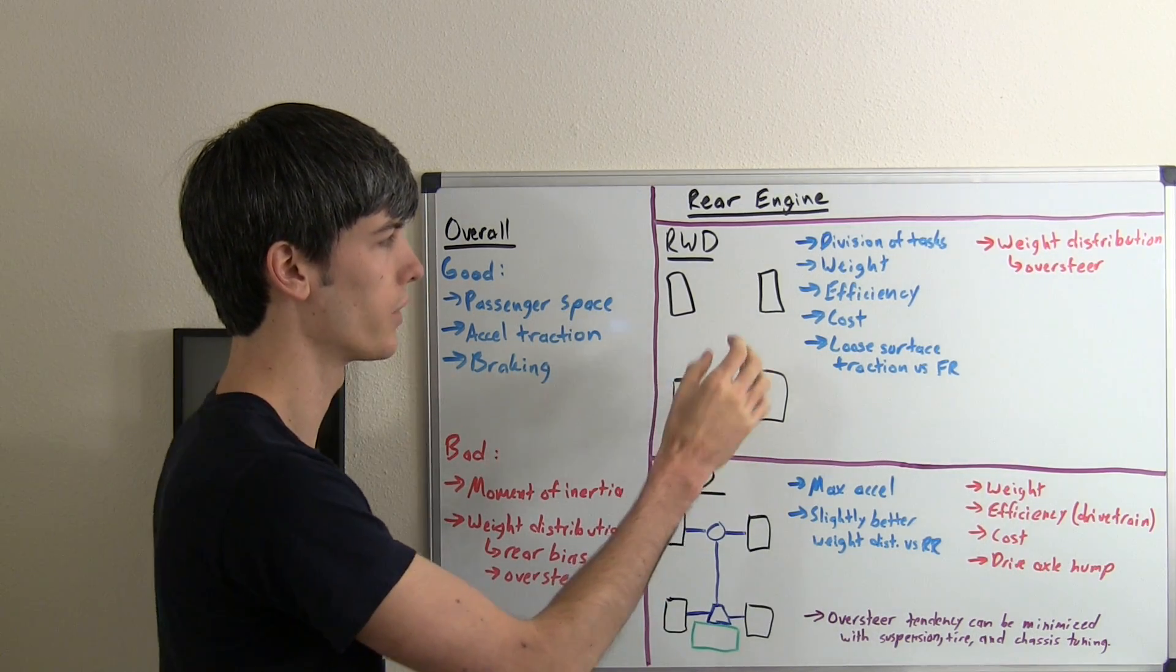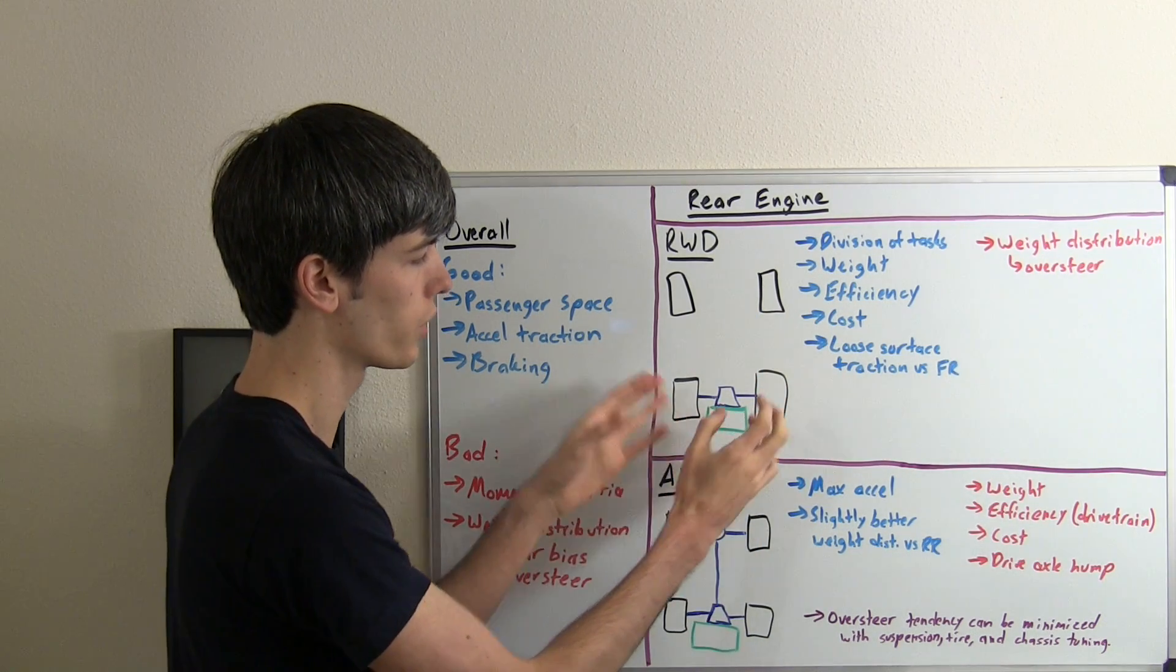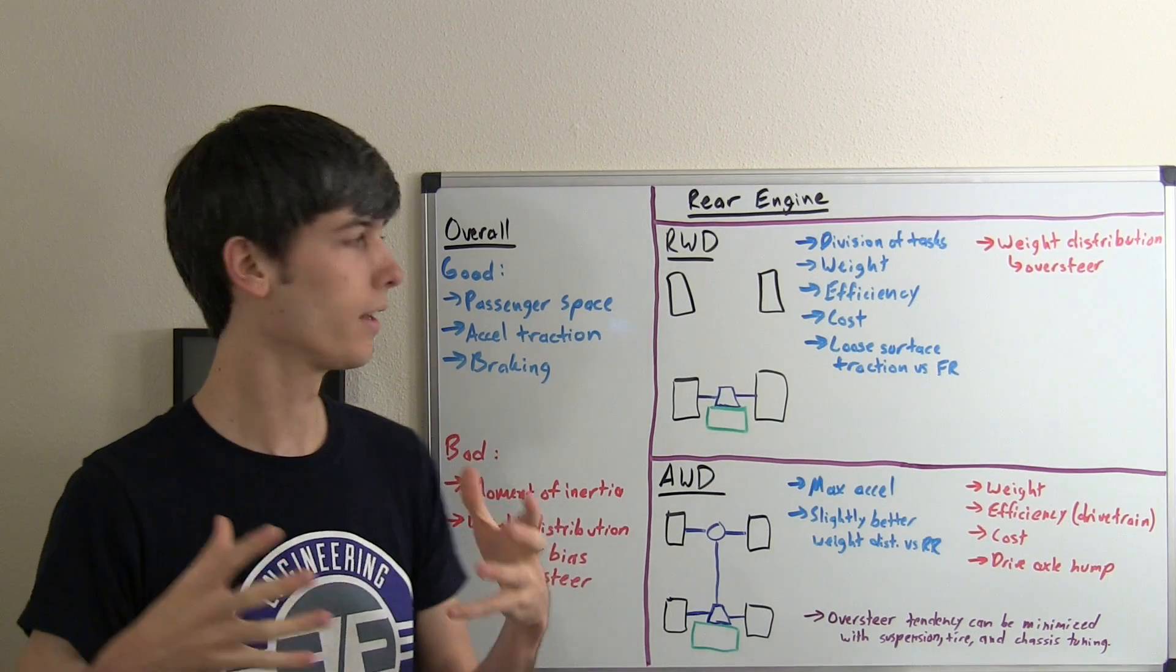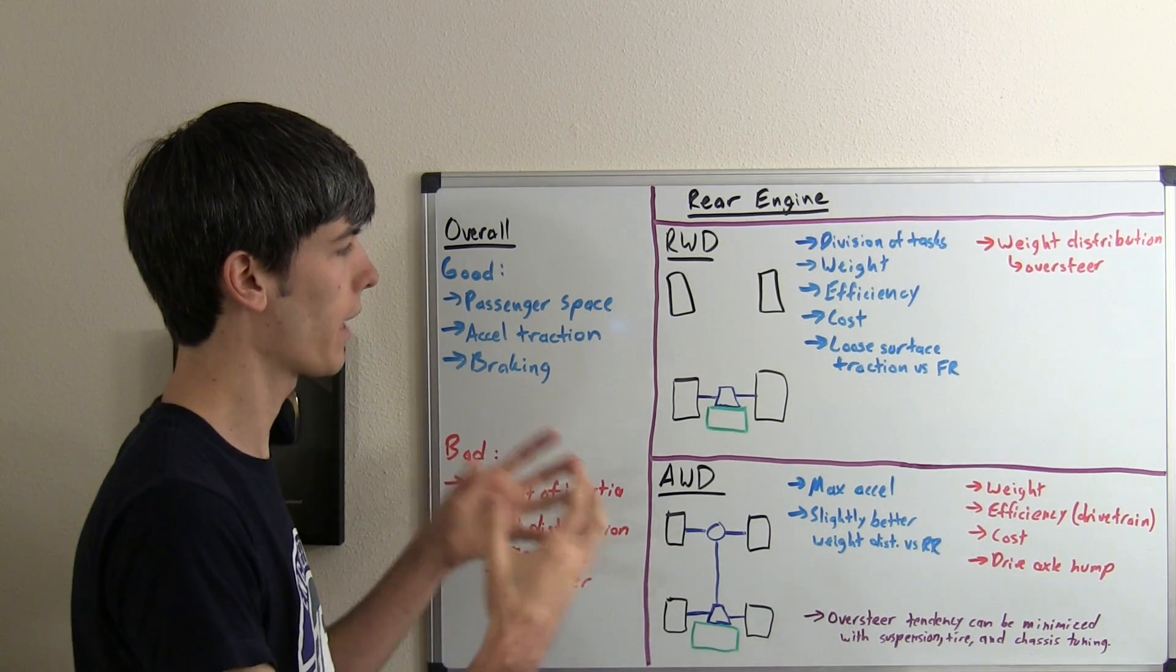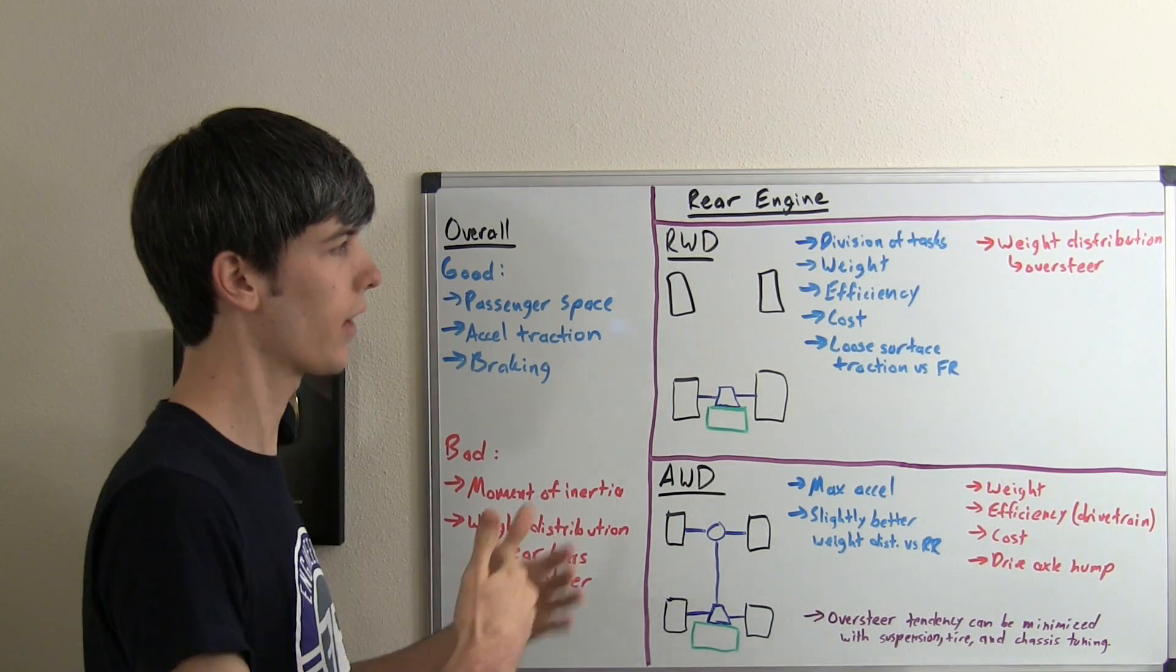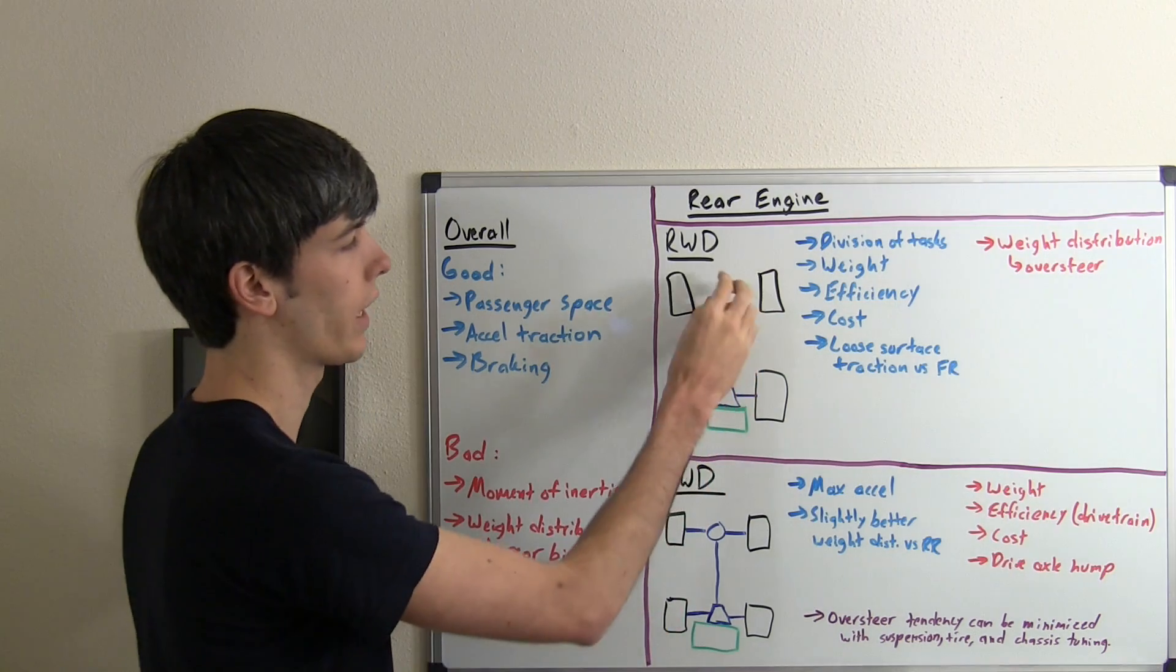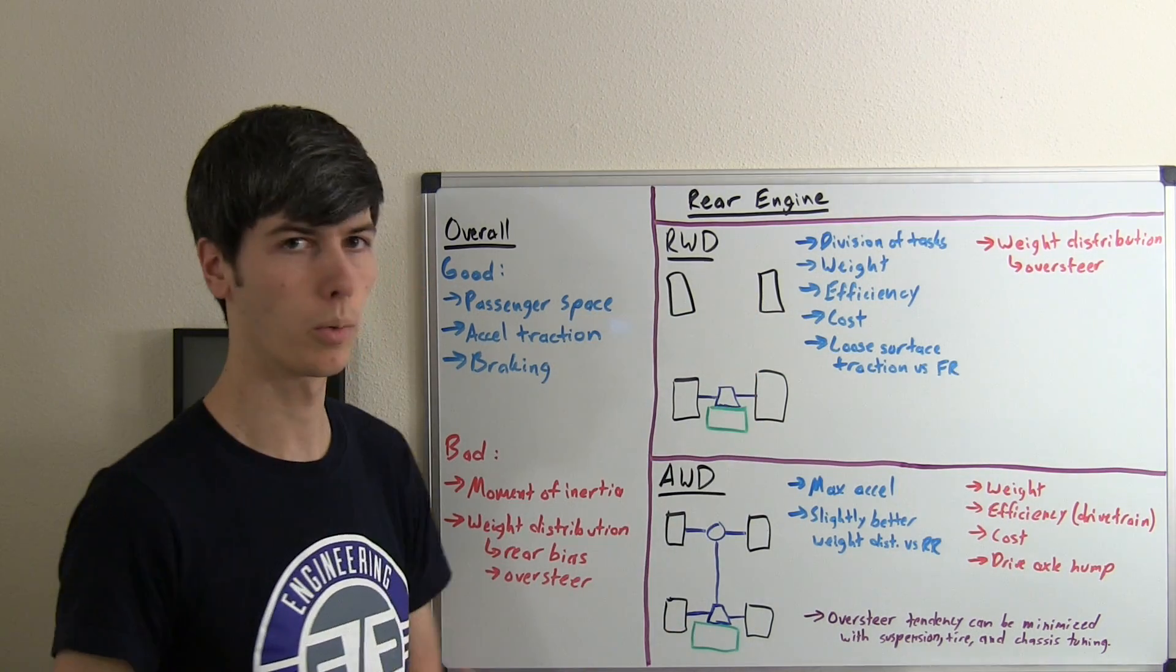Also, much like a front-mounted engine with front-wheel drive, on loose surfaces, because you've got the weight of your engine on top of the driven wheels, your maximum traction—the maximum force that you can apply to the ground—is higher. So you're going to be less likely to spin your tires than if you had a front-mounted engine with rear-wheel drive.